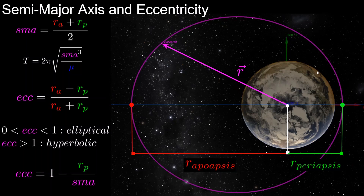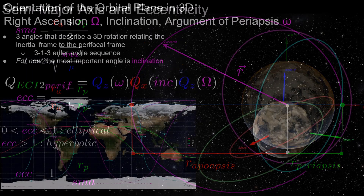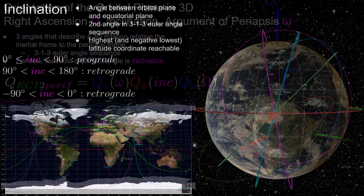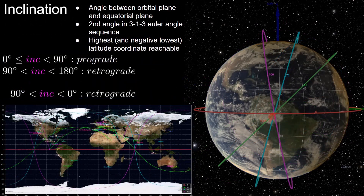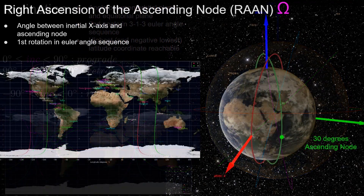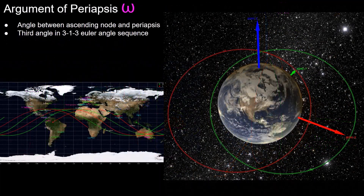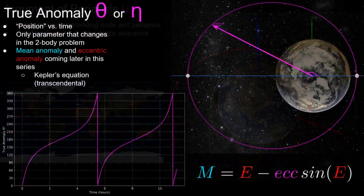In this video, we'll be introducing the Keplerian orbital elements, which include semi-major axis, eccentricity, the orientation of the perifocal frame with respect to the inertial frame with the three angles: orbital inclination, right ascension of the ascending node, and argument of periapsis, and then finishing with true anomaly.